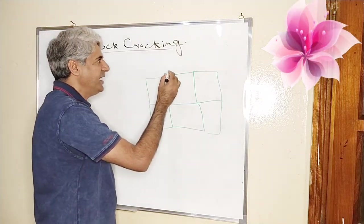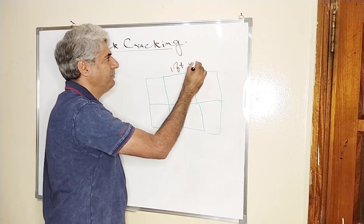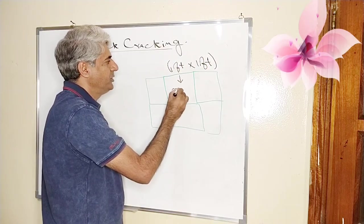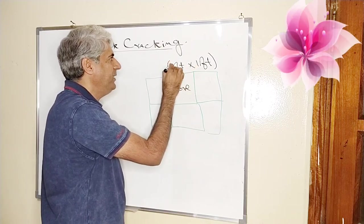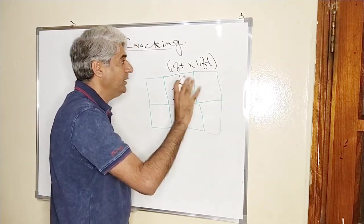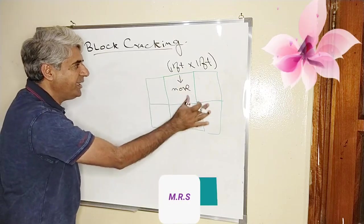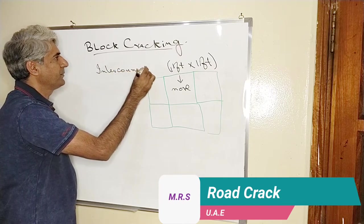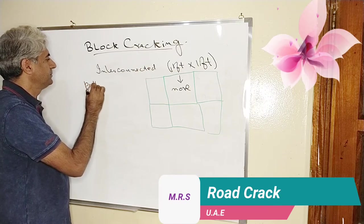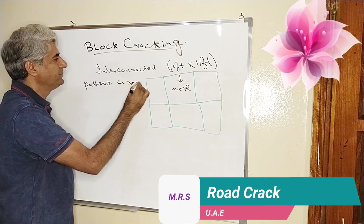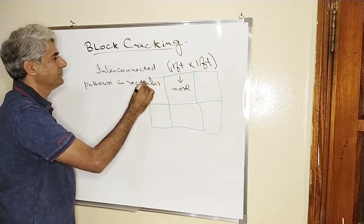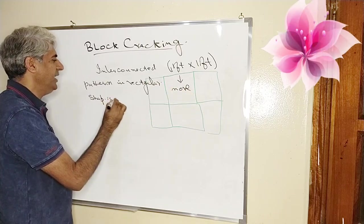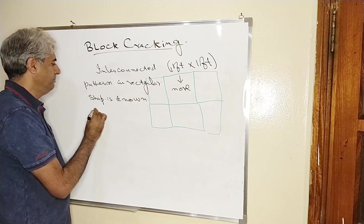For your understanding, the minimum size of block cracking can be one foot by one foot. This is the minimum size — it can be more. Keep this in mind: the minimum size is one foot by one foot or it can be more. These cracks are interconnected with each other, and this interconnected pattern in a rectangular shape is known as block cracking.